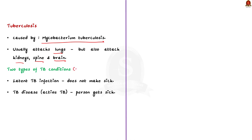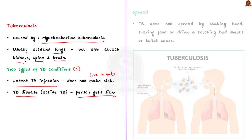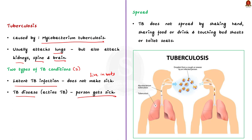TB bacteria spread through air from one person to another. When a person infected with TB coughs, speaks or sings, TB bacteria are released into the air and people nearby may breathe them in and get infected. Note that TB is not spread by shaking someone's hand, sharing food or drink, or touching bed sheets or toilet seats.